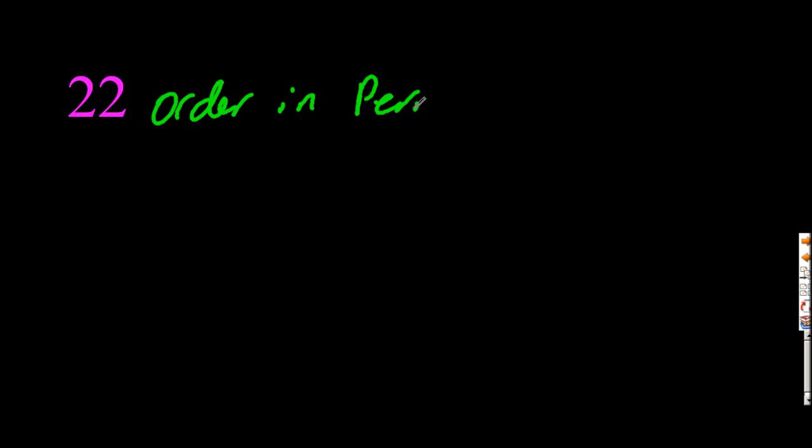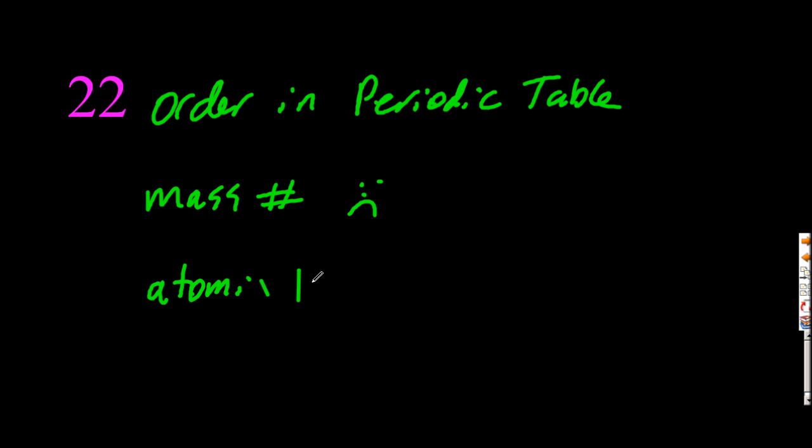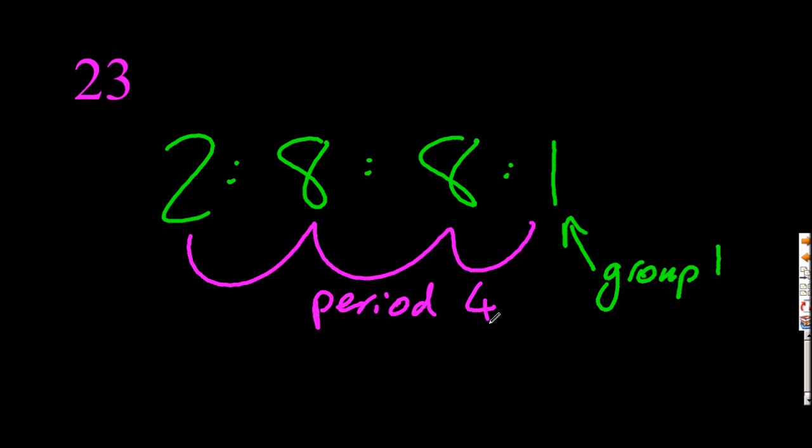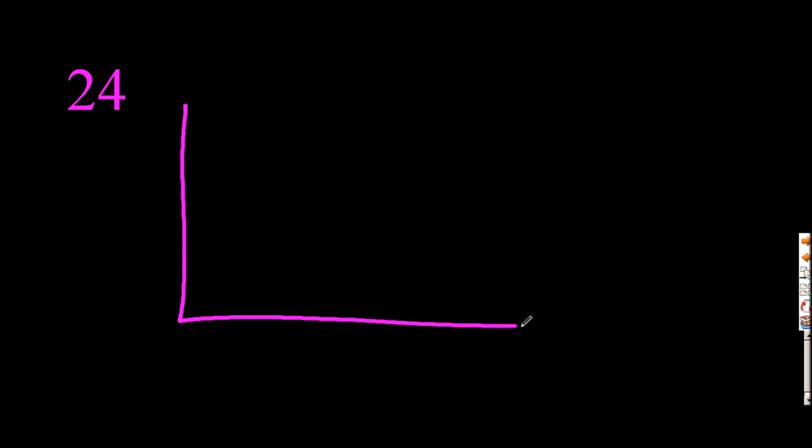22. Periodic table is ordered by mass numbers. No, it's not. It's ordered by atomic numbers. The mass numbers, there are some discontinuities. 2881. It's group one, the last number. And period four, because there are four numbers.